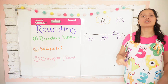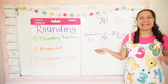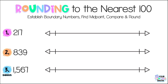Alright besties, now that I showed you two examples go ahead and grab a paper, pencil, or a whiteboard and let's do some practice problems together — it's bestie practice time! Feel free to pause the video and work ahead or just follow along. Draw a number line and start with number one: the number 217, rounded to the nearest hundred. Underline the hundreds place, which is 2. Step one: boundary numbers — 217 lives between 200 and 300. Step two: find the midpoint — the halfway point between 200 and 300 is 250.